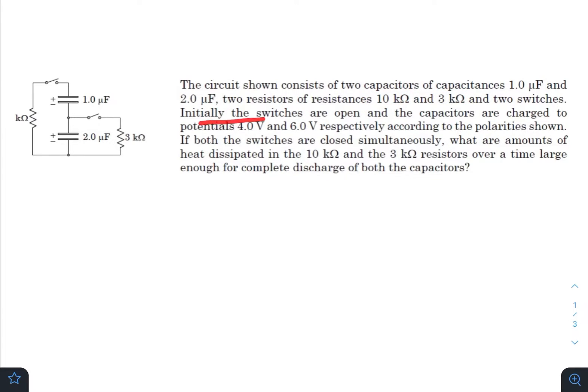Initially the switches are open and the capacitors are charged to potentials 4 volt and 6 volt respectively, according to the polarity shown. If both the switches are closed simultaneously, what are the amounts of heat dissipated in the 10k and 3k resistors?